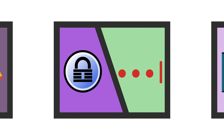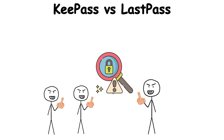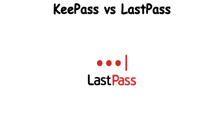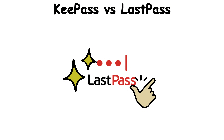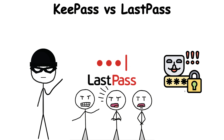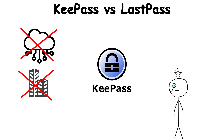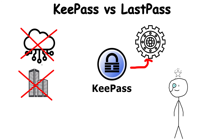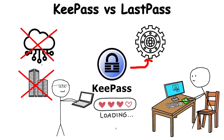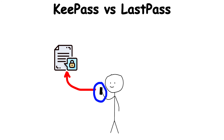KeePass vs. LastPass: Password leaks are everywhere, and people are tired of trusting companies to guard them. LastPass is sleek and convenient, but it's been hacked before, ironically exposing the vaults it was supposed to protect. KeePass flips the script — no cloud, no company, just an open-source vault file you control. Security pros love it because the code can be audited, and it runs offline by default. You can carry the encrypted file on a USB stick, like a digital safe in your pocket.